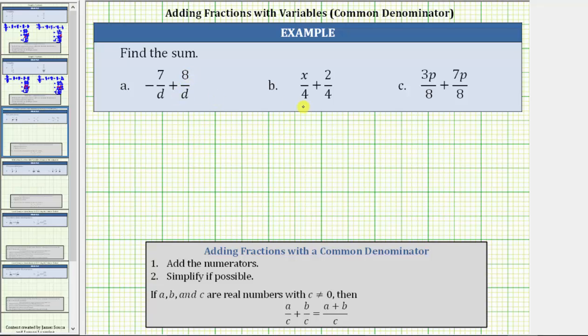We are asked to find each sum. Looking at each sum, notice how the fractions already have a common denominator. To add fractions with a common denominator, we add the numerators and then simplify if possible.